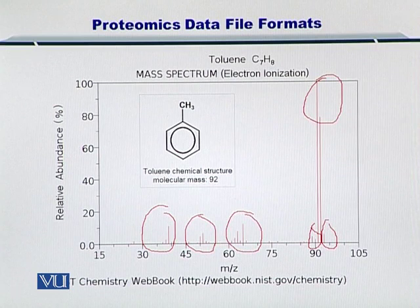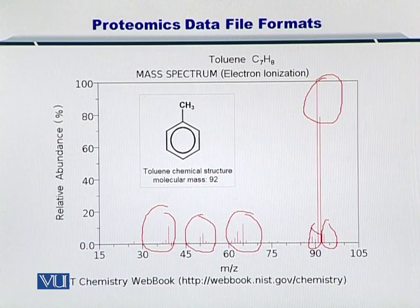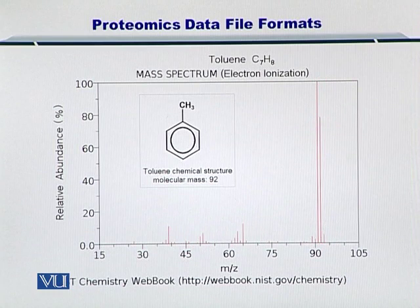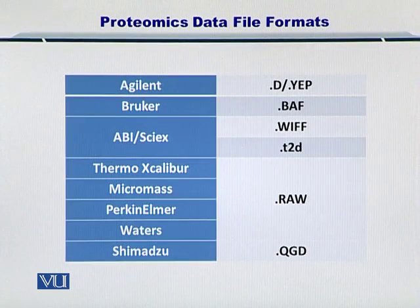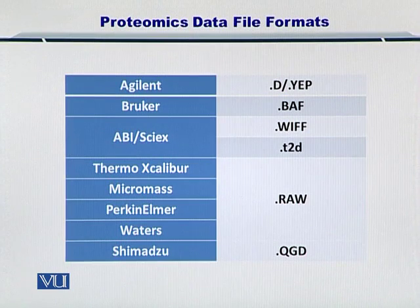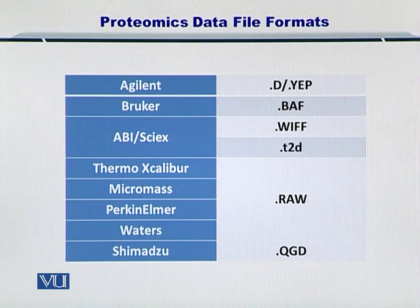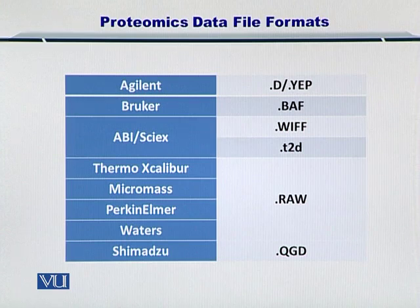Once you have this mass spectrum, you need to output the data from the mass spectrometer onto a computer disk. There are multiple mass spectrometers available in the market. The main companies making these mass spectrometers include Agilent, Bruker, Waters, Shimadzu, ABI, and so on. Each of these companies has its own data file format, organizing the mass over charge ratio and relative abundances of proteins and peptides in their own specific way.